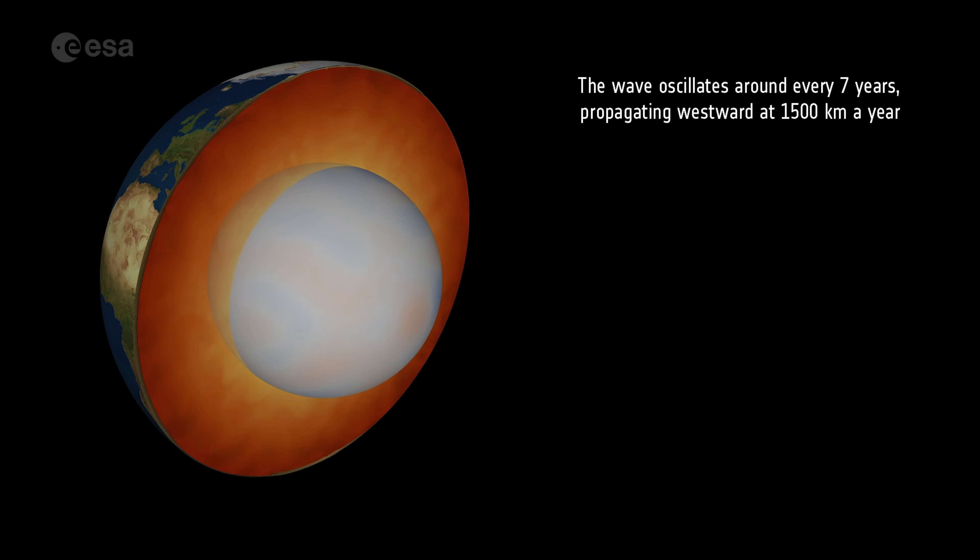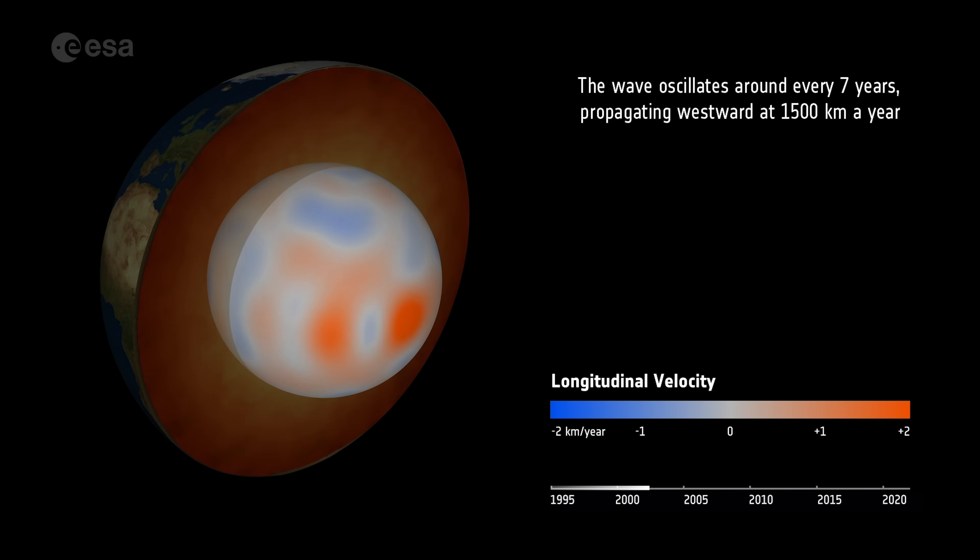The wave oscillates around every seven years, propagating westward at 1,500 kilometers a year.